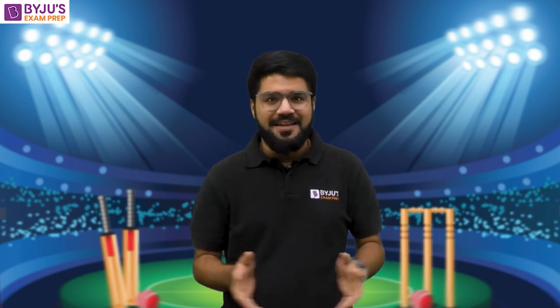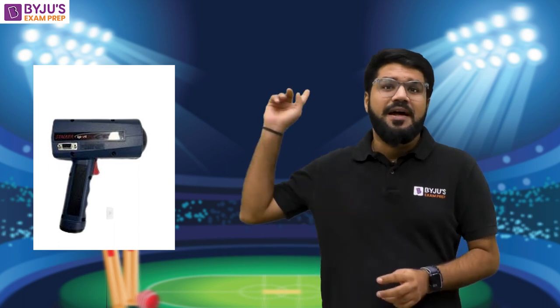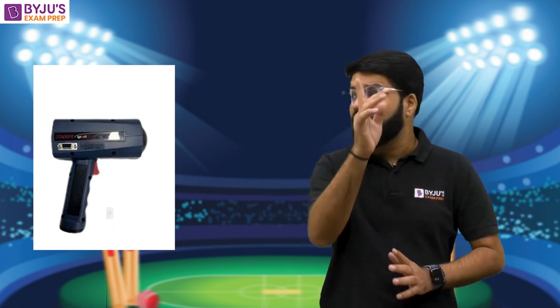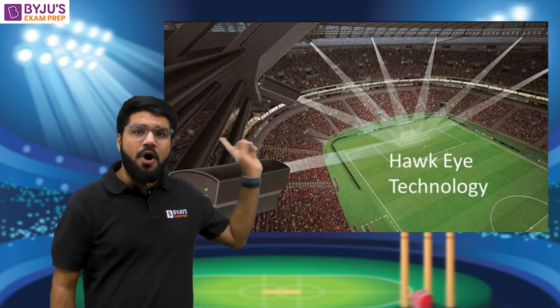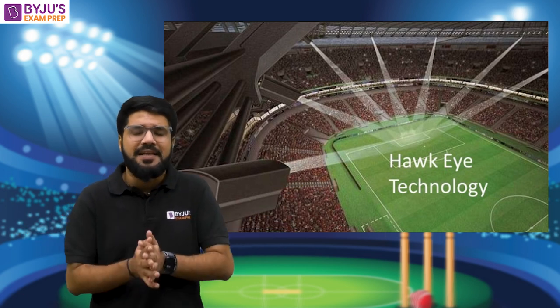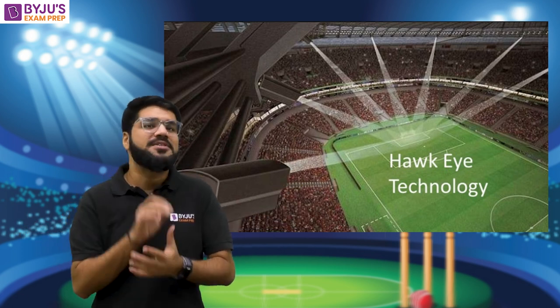How fast is a cricket ball? How is the speed of balls calculated in cricket or tennis? In cricket, there are primarily two methods to determine ball speed: number one is the radar gun, which is based on the concept of the Doppler effect, and number two is the Hawk-Eye system, a computerized system containing six different cameras to capture the ball speed.